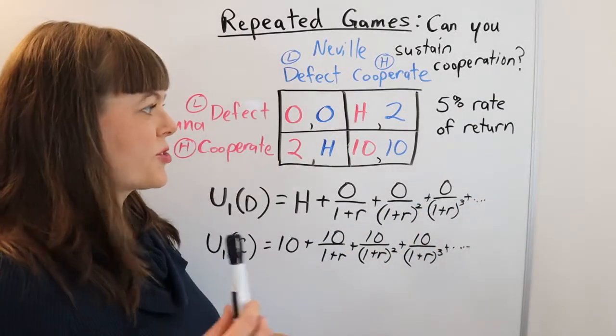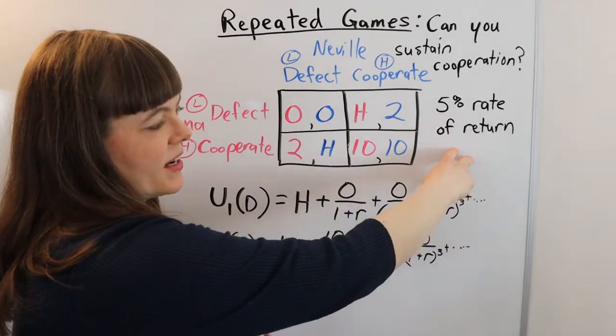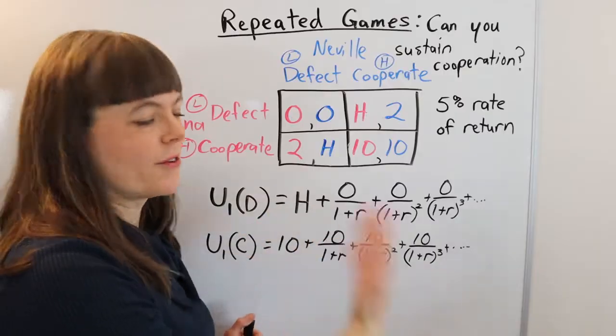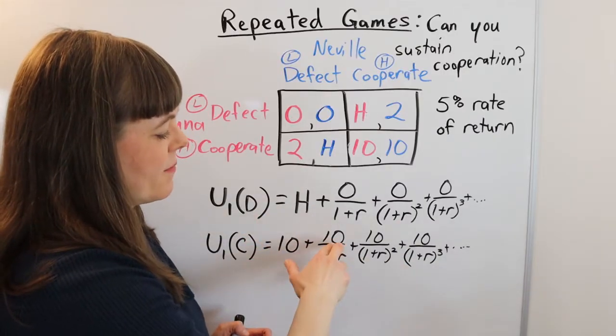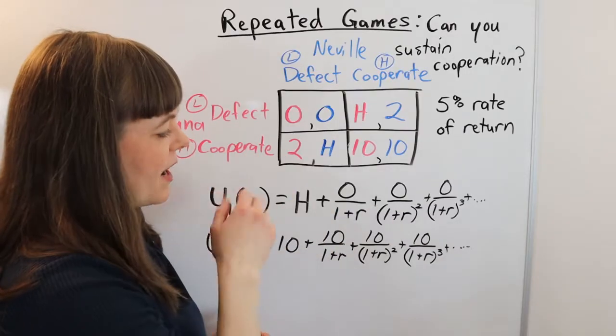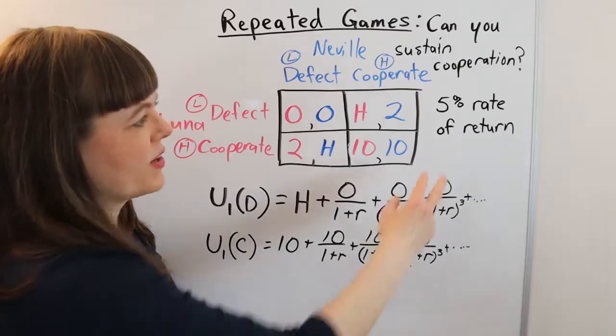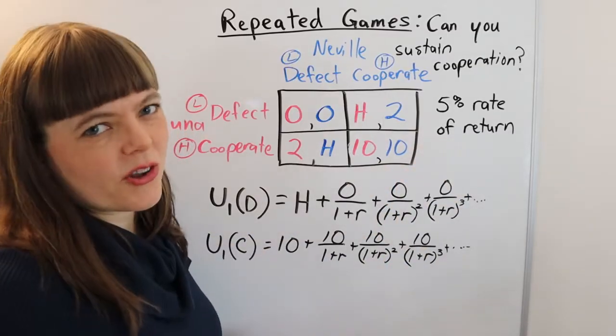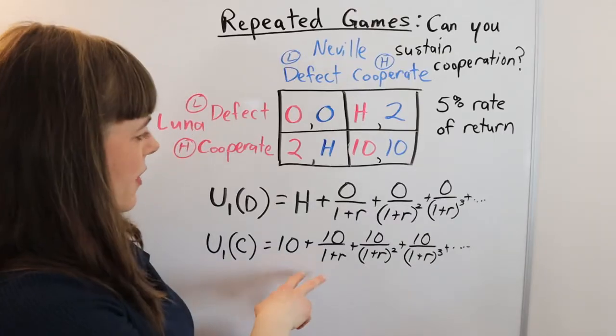And since we're doing an infinitely repeated game into the future, we're going to need a rate of return or a rate of discounting the future because otherwise, any amount with a positive value is going to have an infinite value. So it would not work mathematically if we didn't discount, but there are also intuitive reasons for discounting, which I explain in other videos.